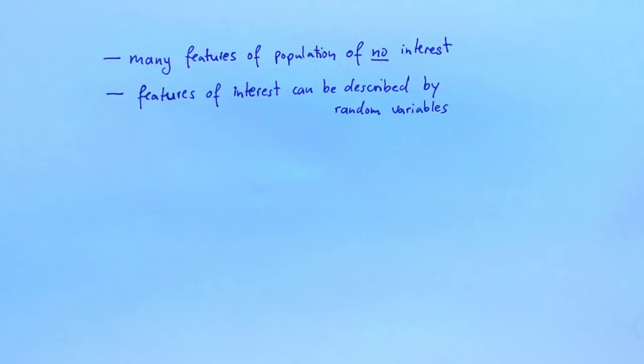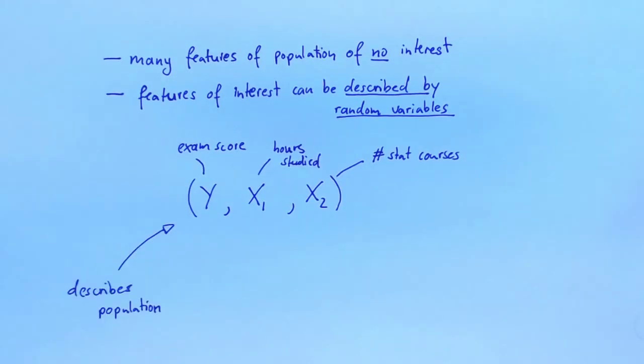To study an empirical research question, I rarely have to know all of the facets of a population. To investigate the relationship between study time and exam scores, I probably don't have to know that Alice plays basketball or that Ben loves Game of Thrones. To describe the features of the population that are relevant to my research question, I can use random variables. Suppose that my research question can be adequately addressed by considering three variables. Y gives the exam score of a student. X1 gives the number of hours studied. And X2 tells me how many statistics courses the student has already taken before starting the econometrics course.